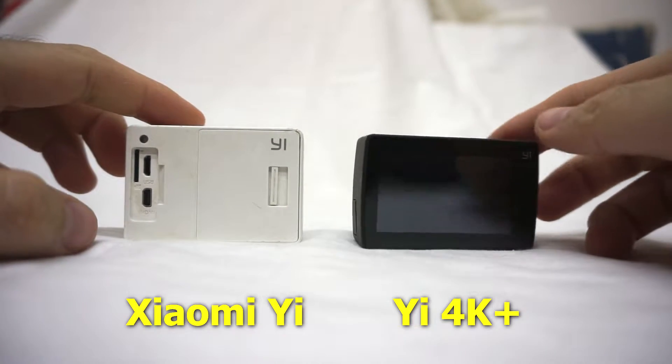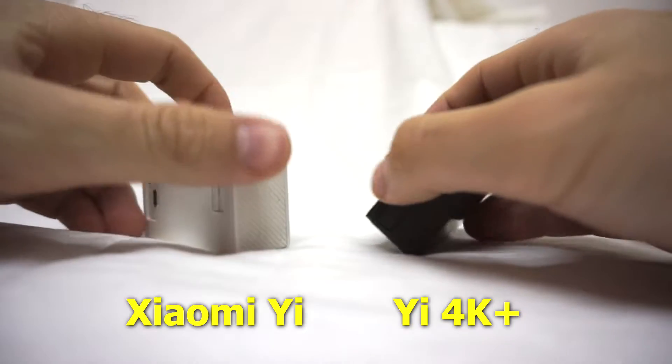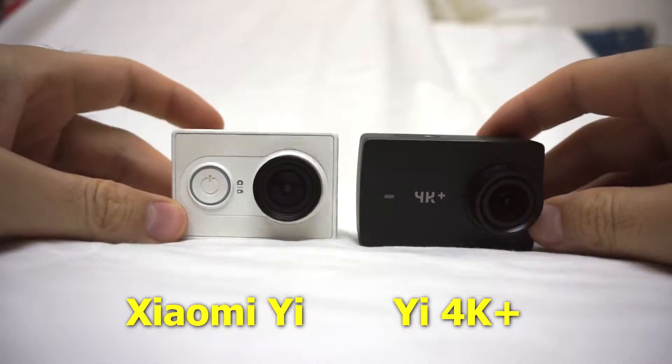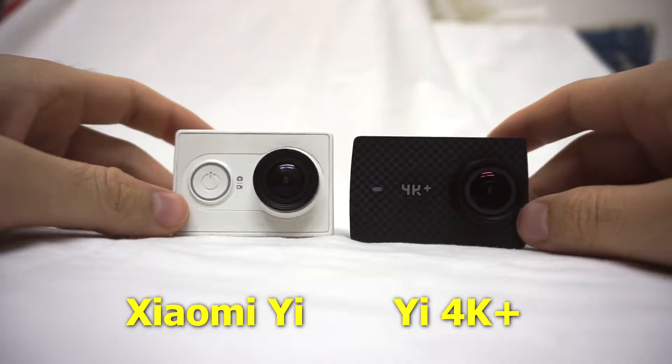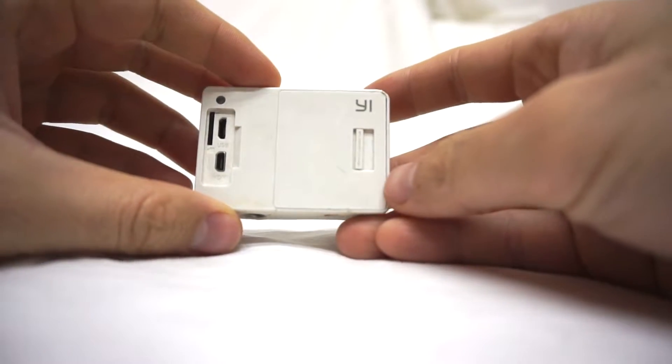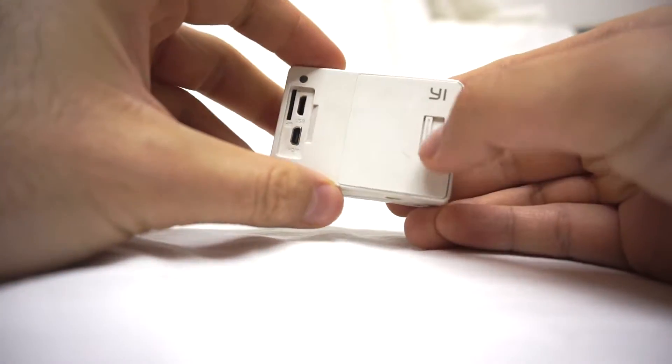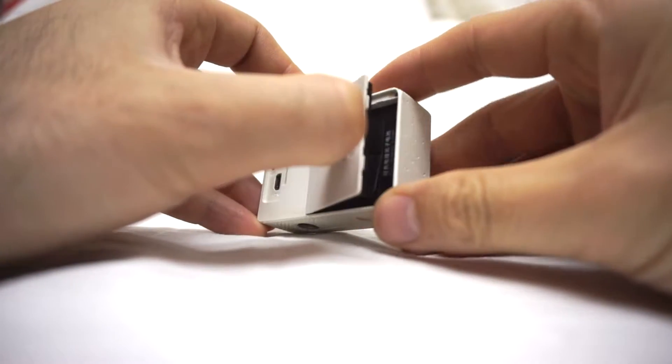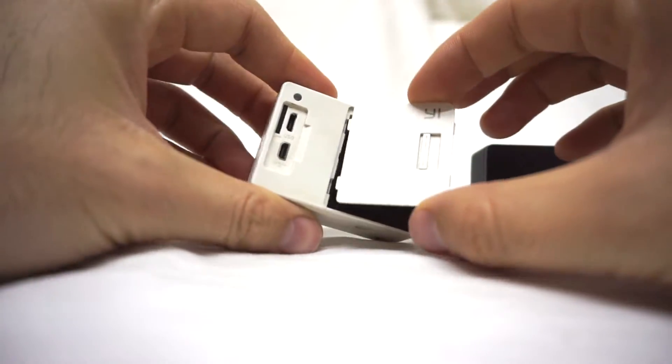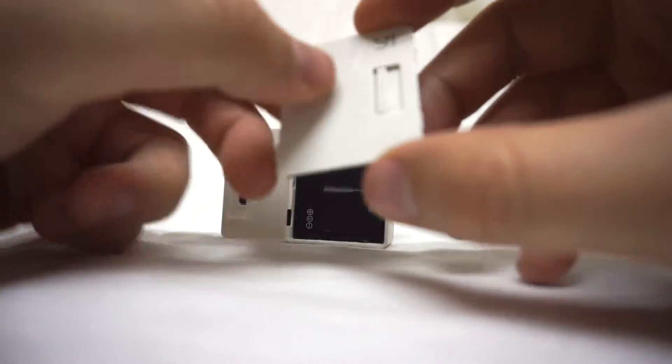Okay, here's the YI One and that's the YI 4K Plus. Let's compare the batteries. On the YI One, you have to push this thing to the left, and then this small door opens and it's removable.